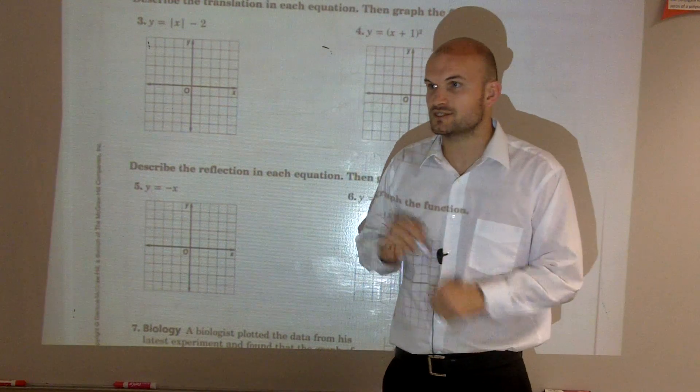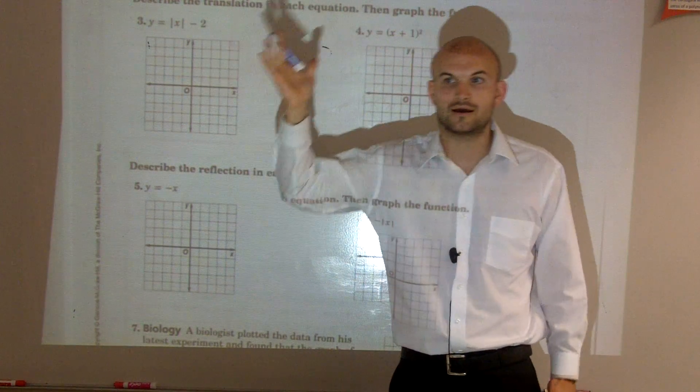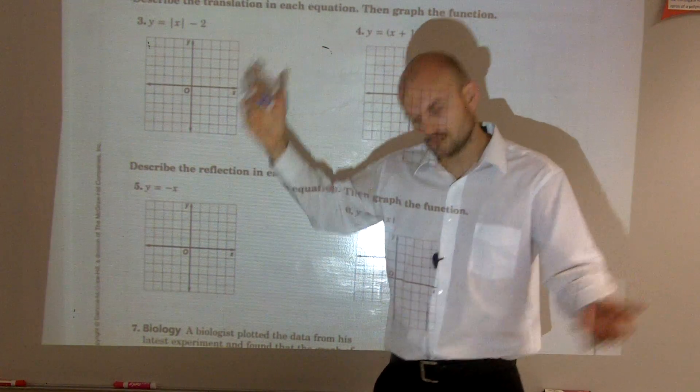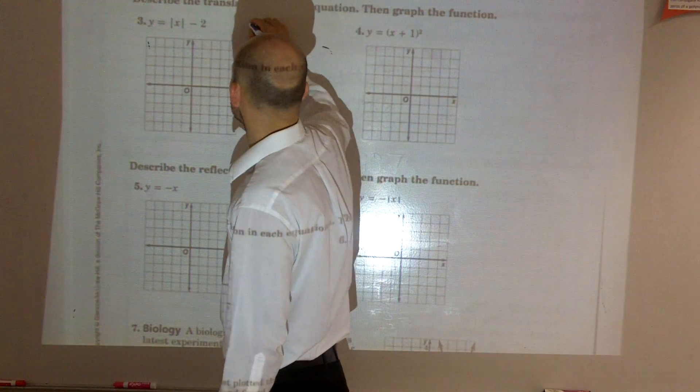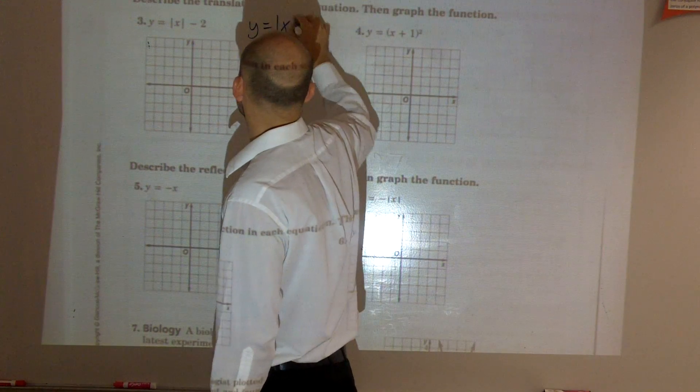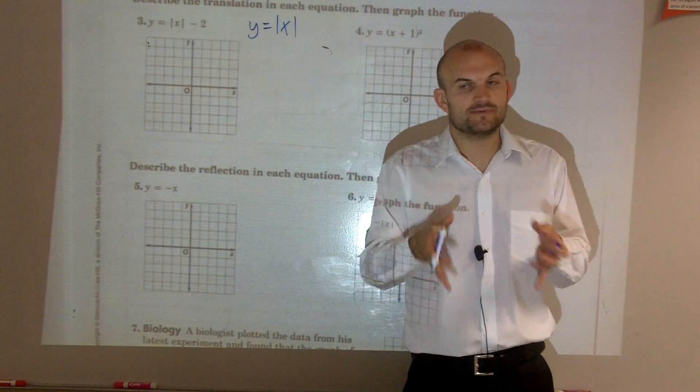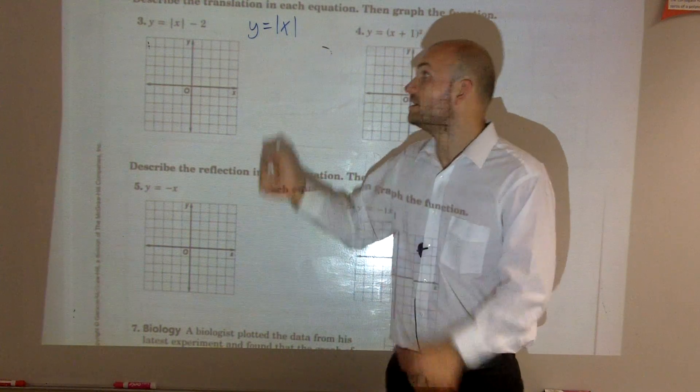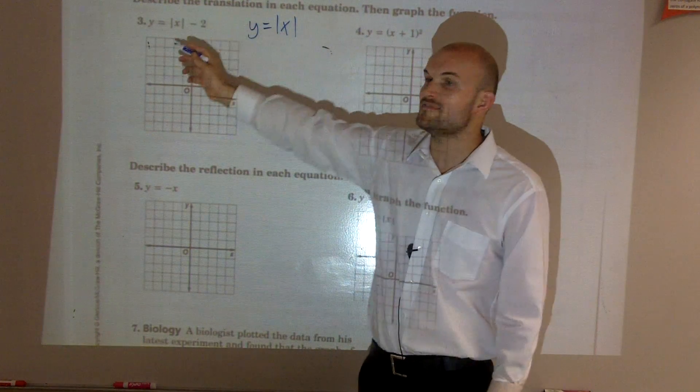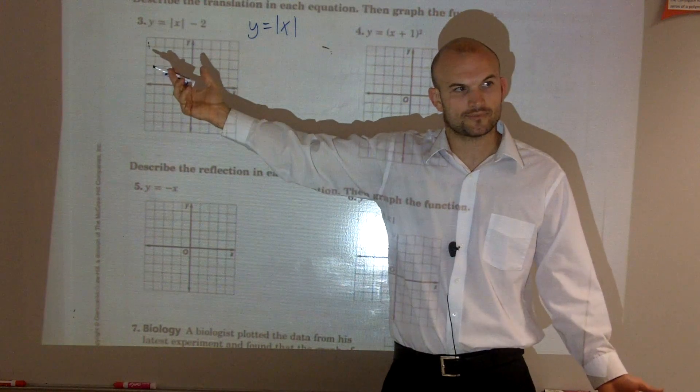And the parent function for this is going to be, any guesses? Anybody? Y equals absolute value of x. Just y equals absolute value of x, right? Because remember, the parent function is going to be your simplest form of your function. Here, I have absolute value of x. Here, I have absolute value of x minus 2, all right?